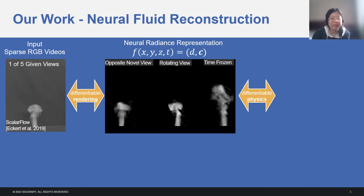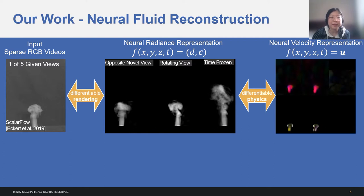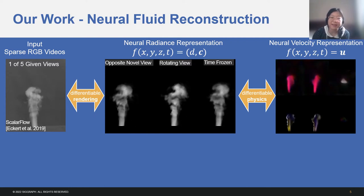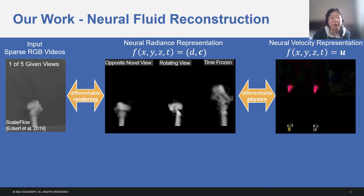While differentiable rendering helps the static NERF model to unify radiance information spatially using images at different camera poses, it is important for dynamic NERF model to unify information temporally according to images at different time steps. This needs to be done with differentiable physics.